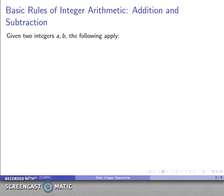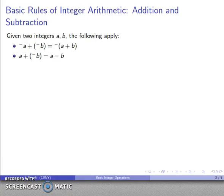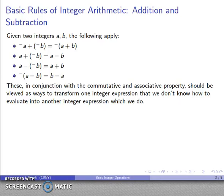Let's take a look at some basic rules for integer arithmetic for addition and subtraction. Given two integers a and b, the following rules apply: negative a plus negative b is the same as negative of (a plus b); a plus negative b is the same as a minus b; a minus negative b is the same as a plus b; negative a minus b is the same as b minus a. Using the commutative and associative properties, the key is that I can transform one integer expression into a different one — maybe I don't know how to do one side but I can do the other.